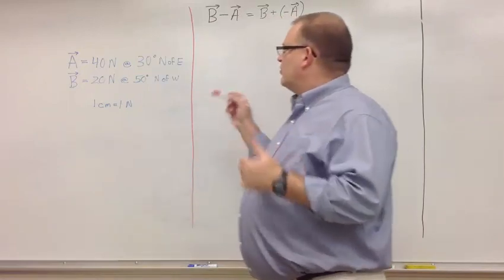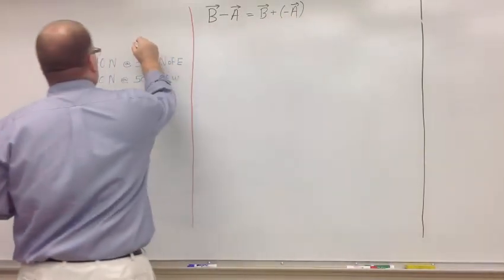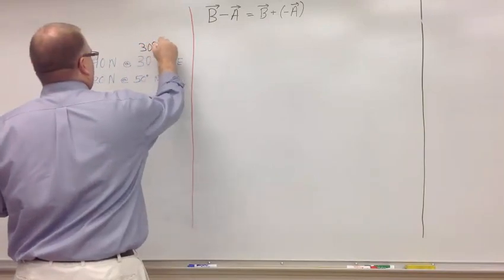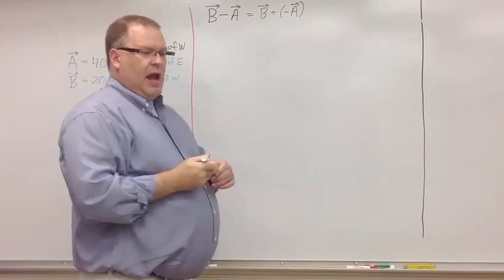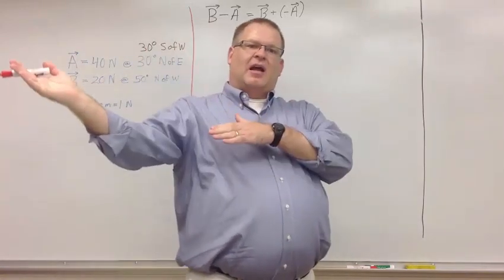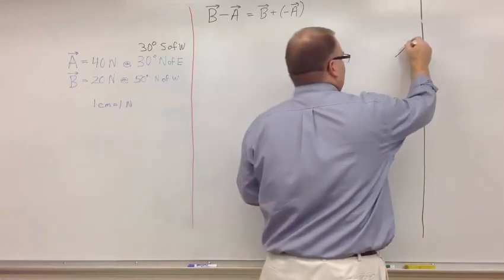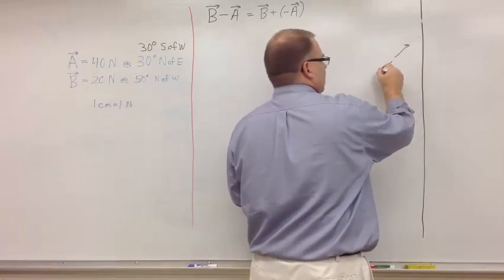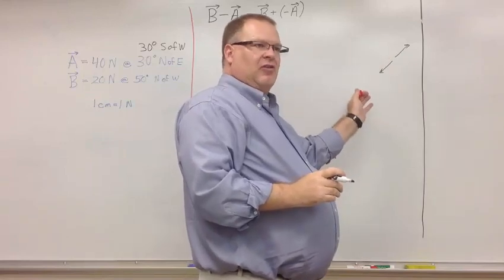So instead of 30 degrees north of east, I'm going to go 30 degrees south of west. And that opposite is exactly 180 degrees. So north of east is in this direction. South of west is in that direction. And there's my 180 degrees opposite direction.